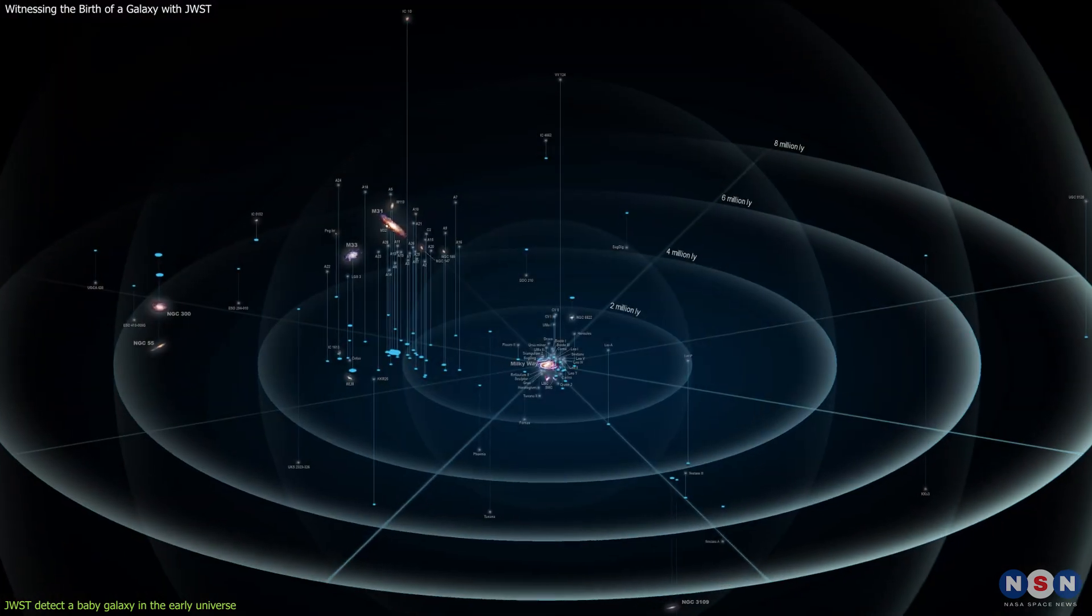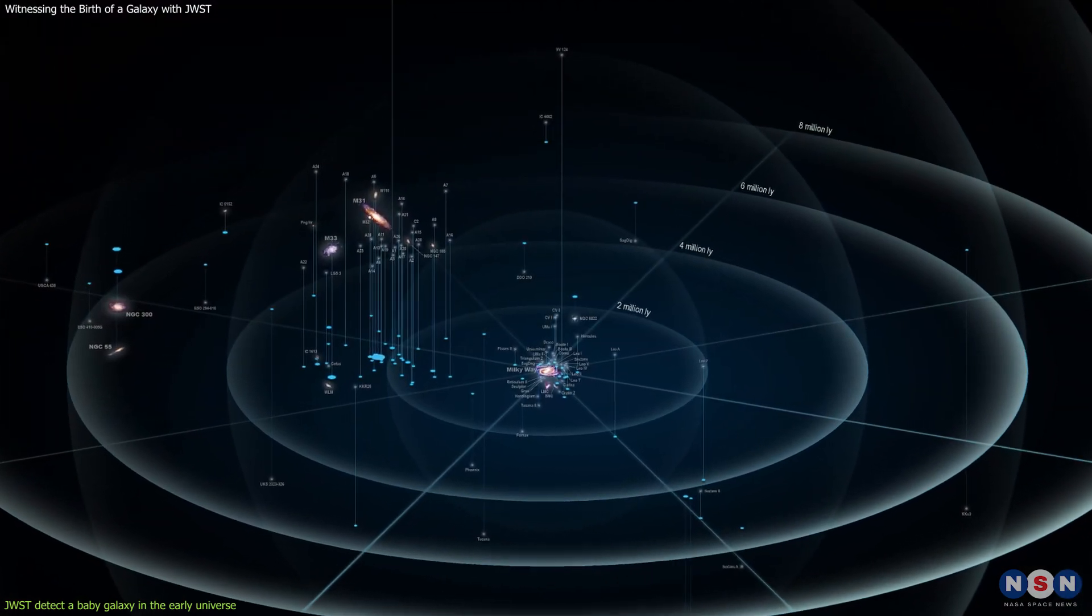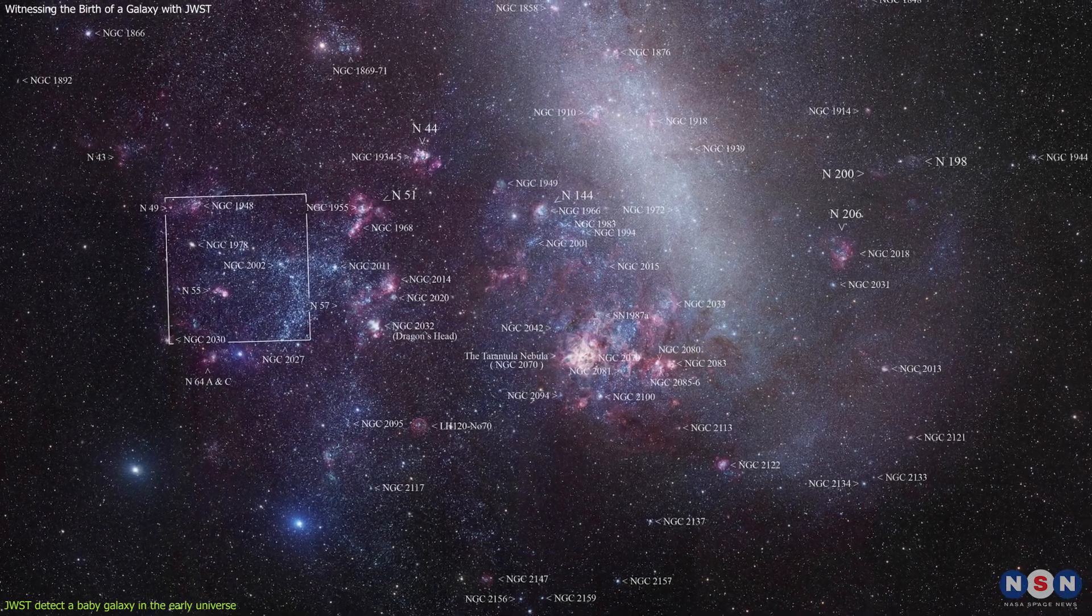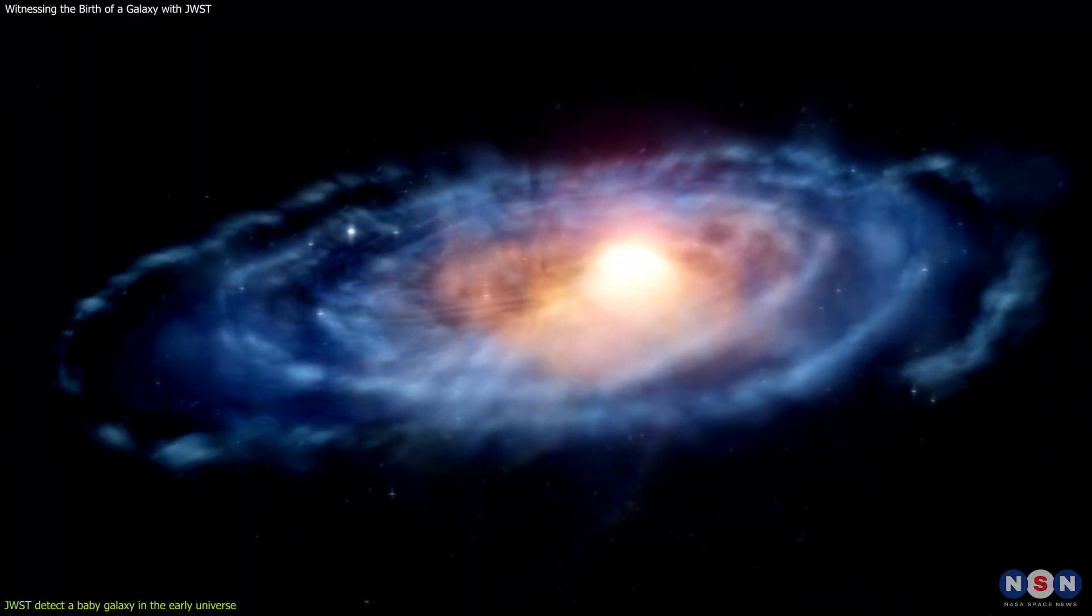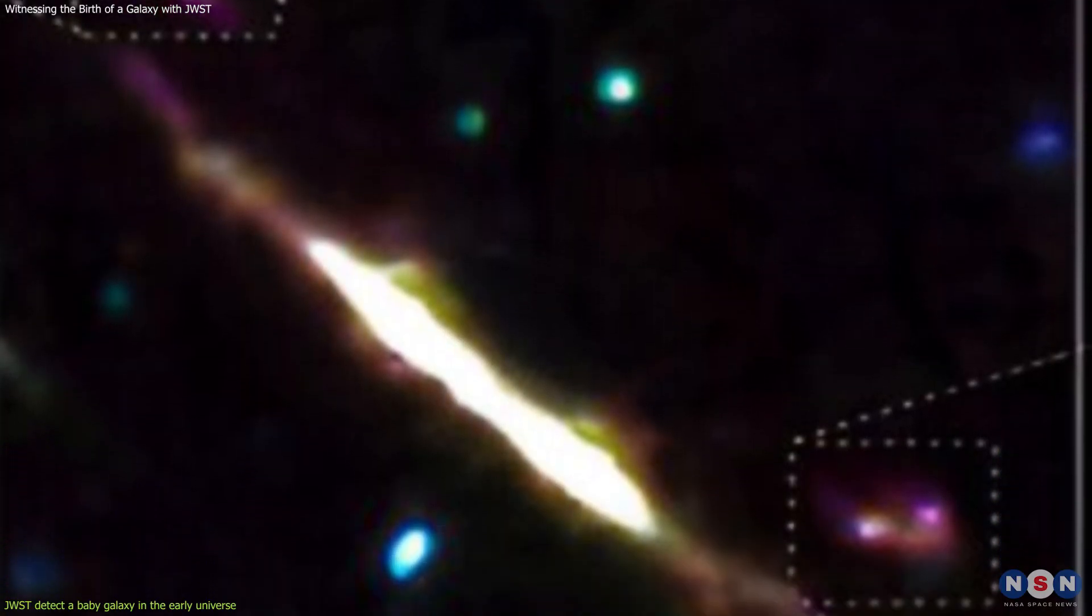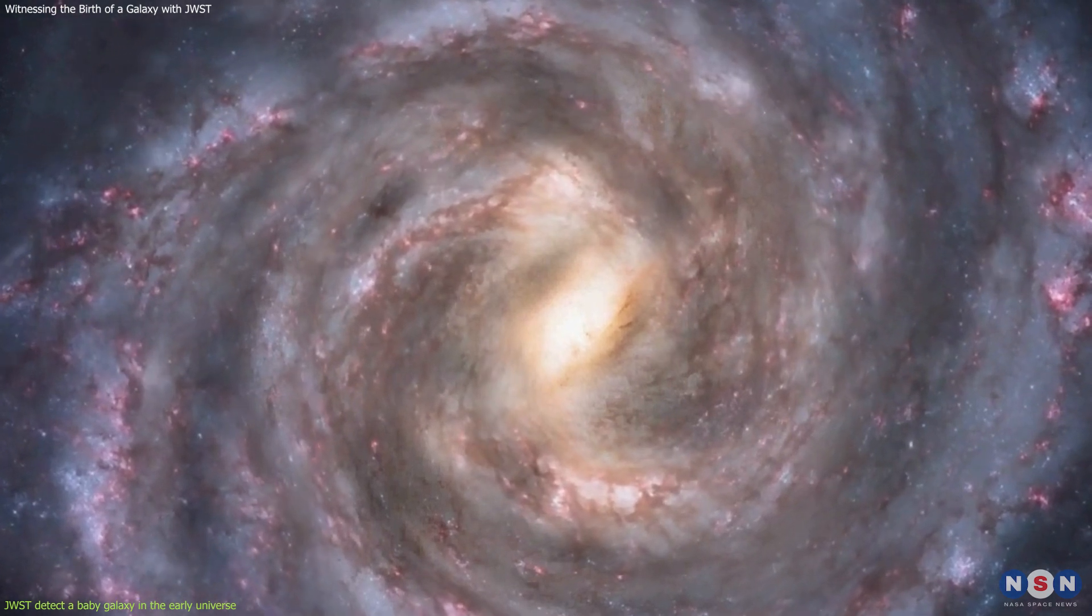The baby galaxy is estimated to have a mass of about 2 billion times that of our Sun, which is comparable to some of the smallest galaxies in our local group, such as the Large Magellanic Cloud. However, it is much more compact and dense than these galaxies, with a size of only about 2,000 light years across, or about 20 times smaller than our Milky Way.